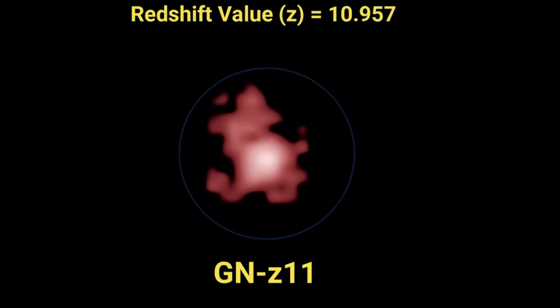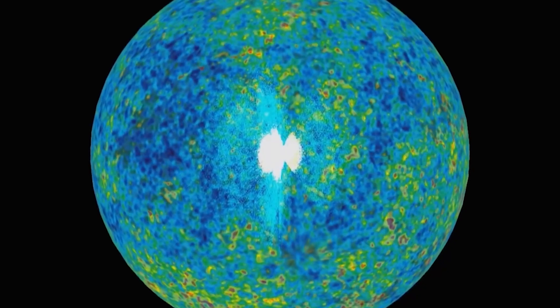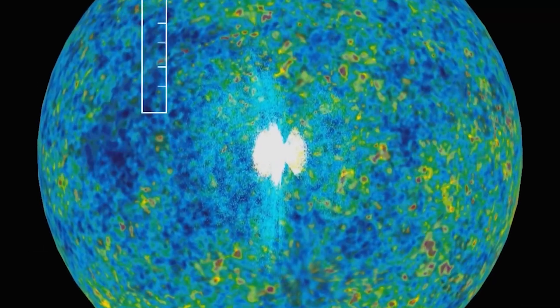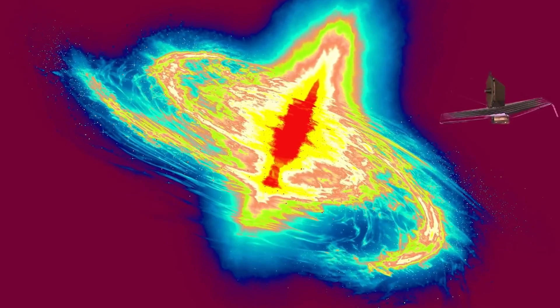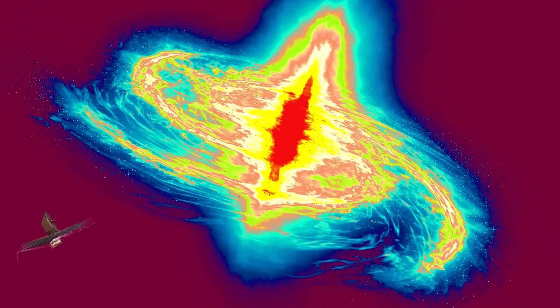GNZ 11 boasts a redshift value of 10.957, making astronomers believe that galaxies beyond redshift 11 were scarce. The James Webb Space Telescope, equipped to detect infrared light, changes the game.